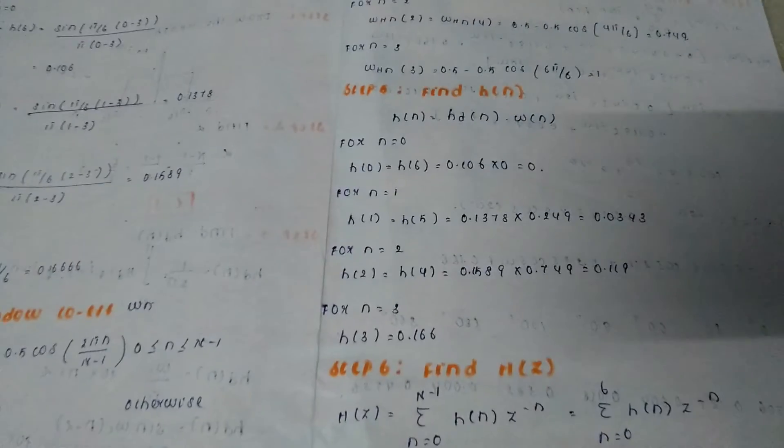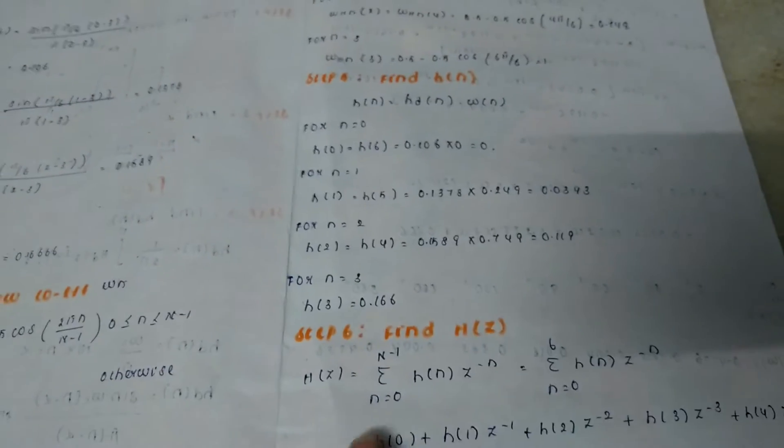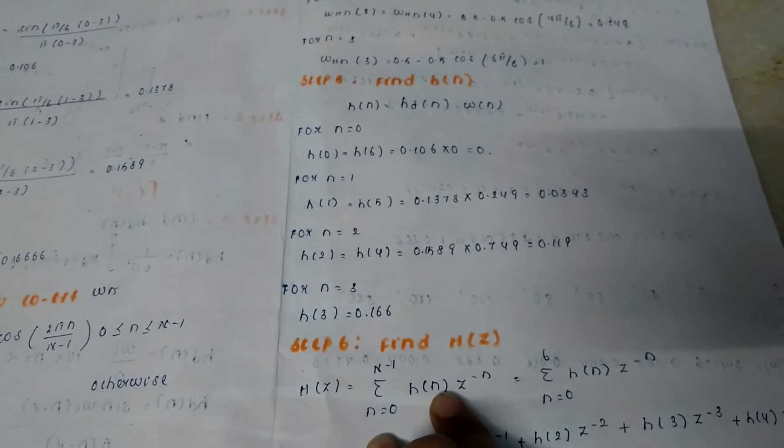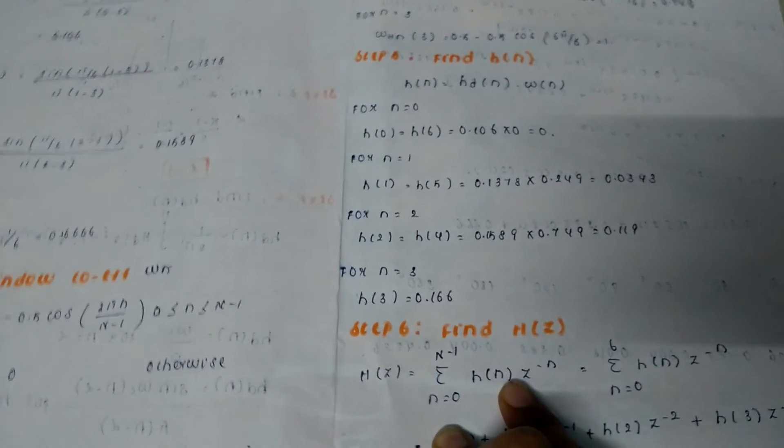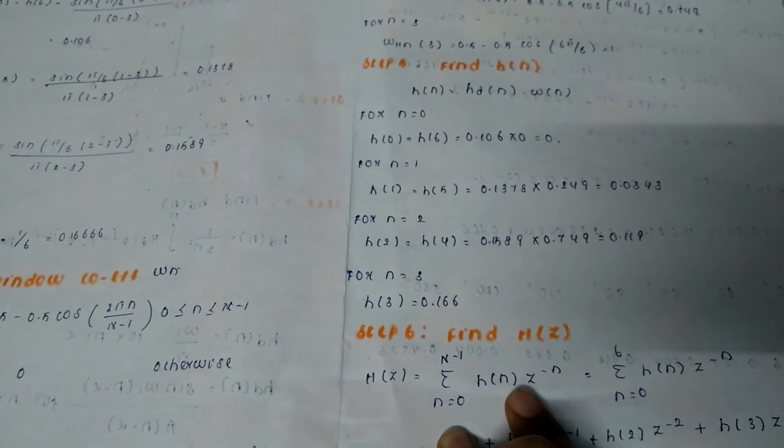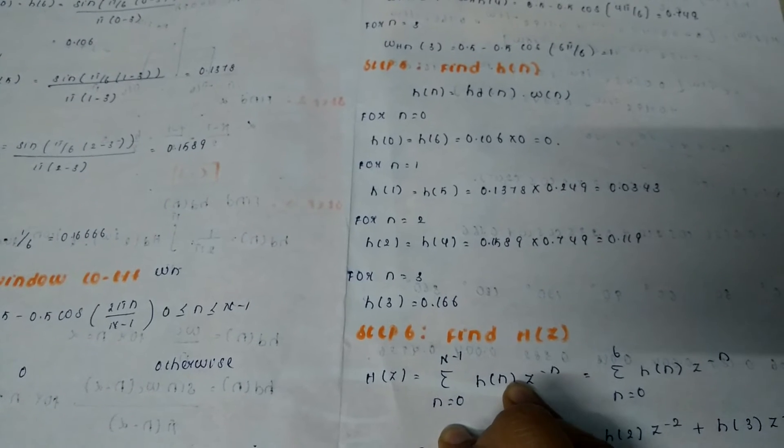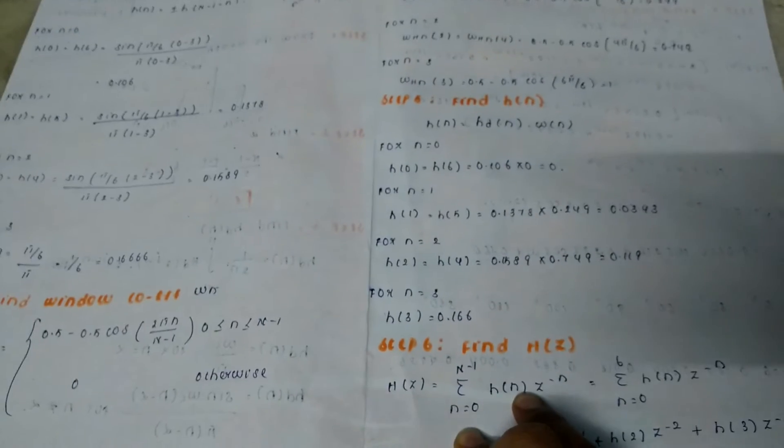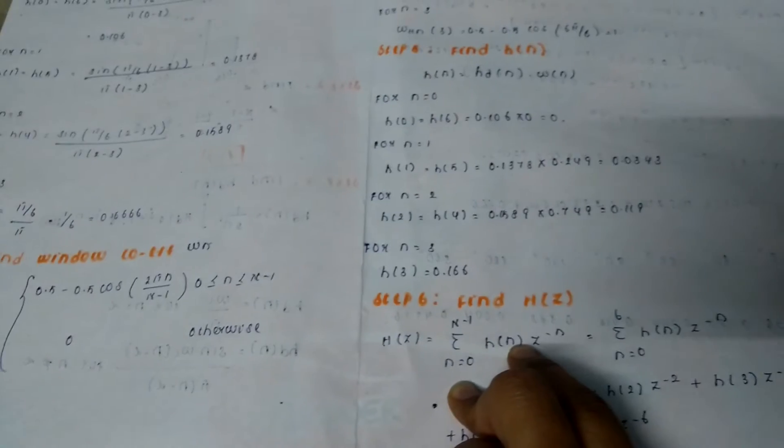Then similarly substitute from n = 0 to n = 6. Here h(0) = h(6), h(1) = h(5), h(2) = h(4), and h(3) is your center of symmetry.